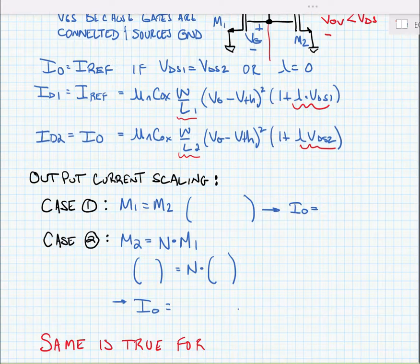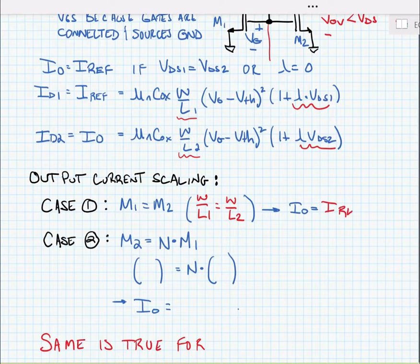So we have two cases. We have a case where transistor M1 is equal to transistor M2. In other words, what we're saying is W over L1 is equal to W over L2. And if this is the case, then the output current is going to be equal to the reference current. Again, assuming the same drain to source voltage or the same lambda condition.